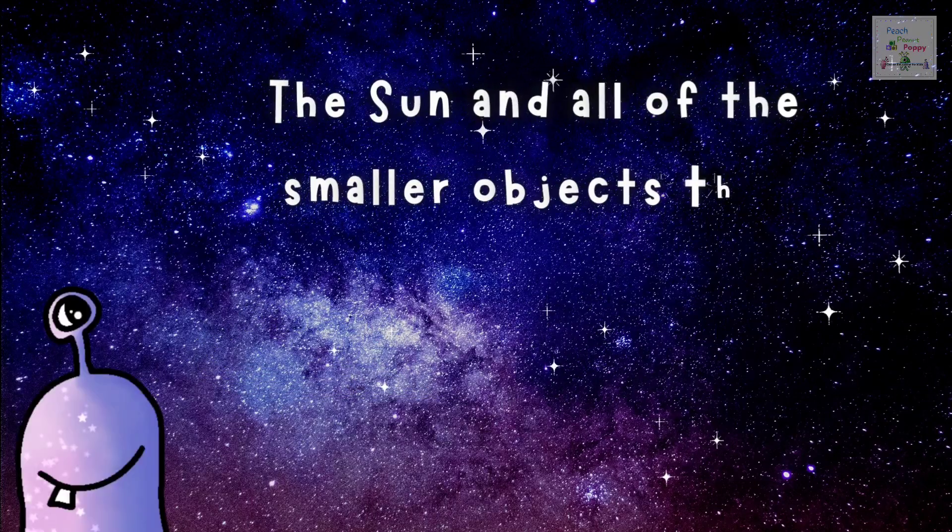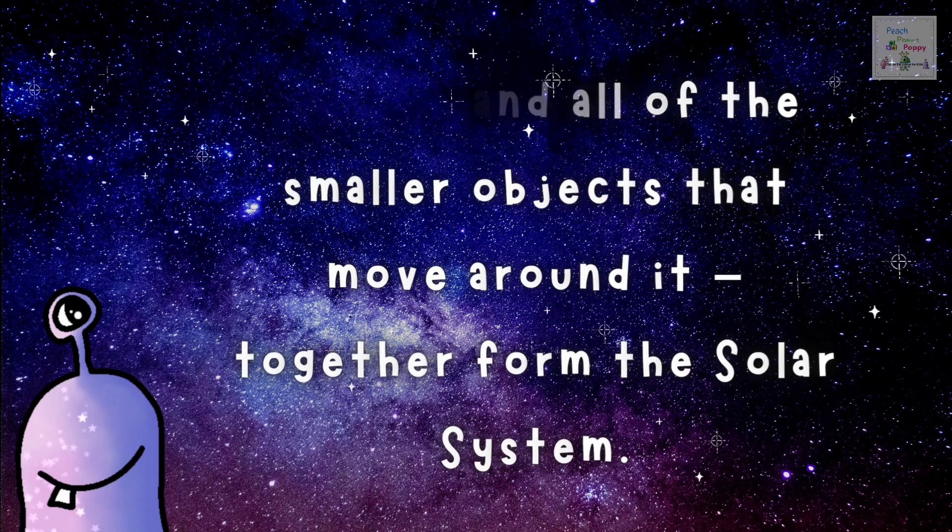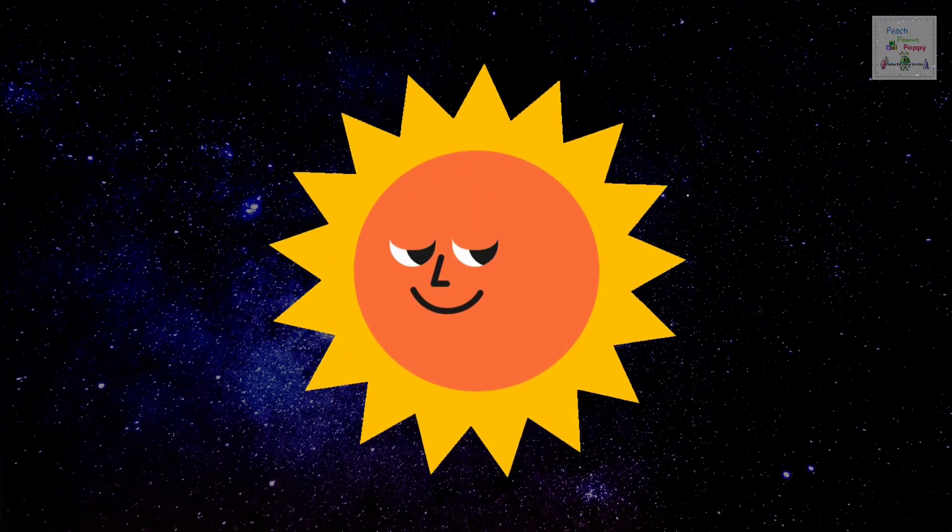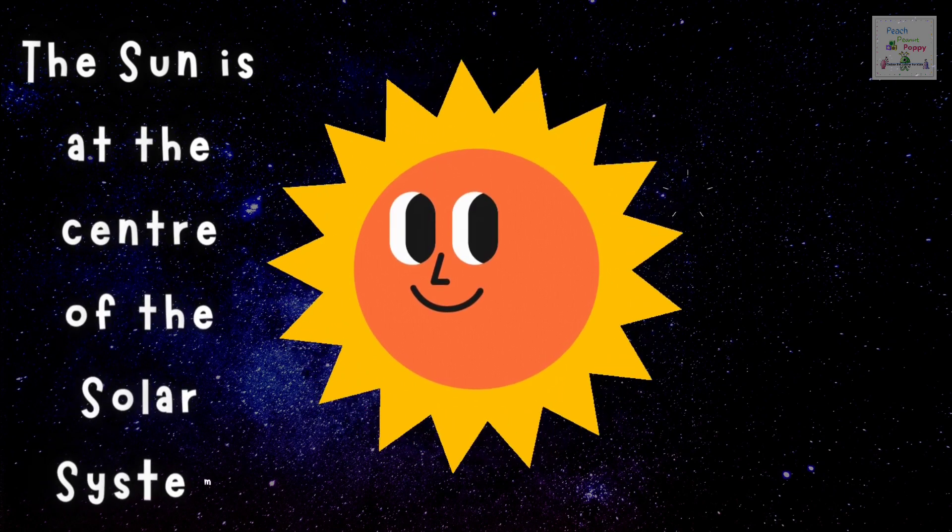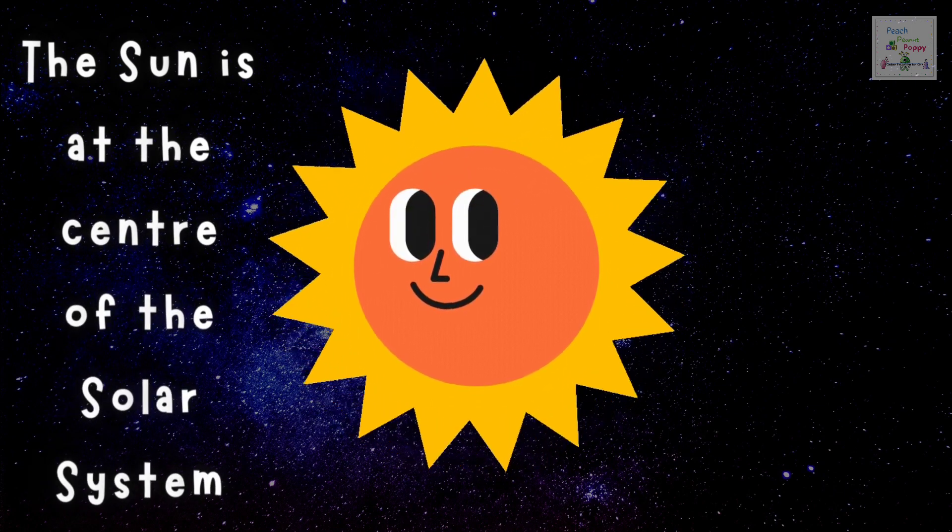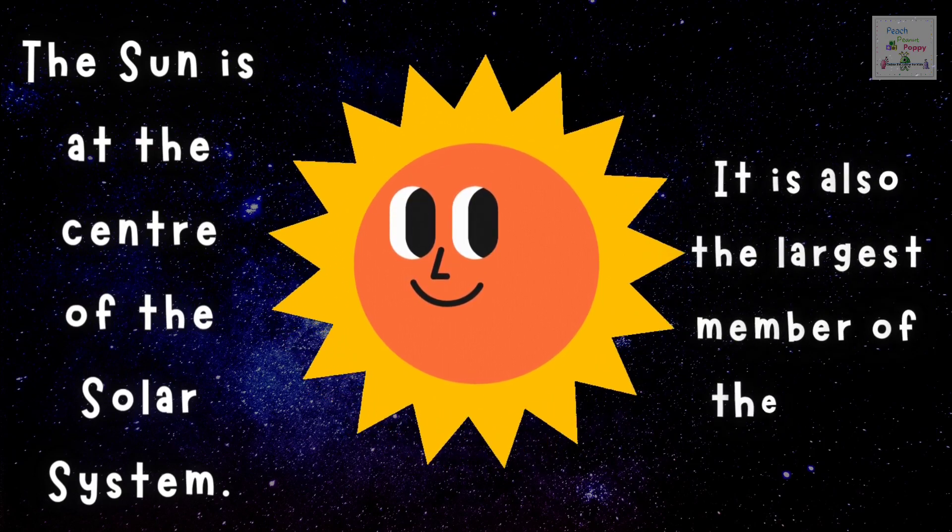The Sun and all of the smaller objects that move around it together form the solar system. The Sun is at the center of the solar system. It is also the largest member of the solar system.